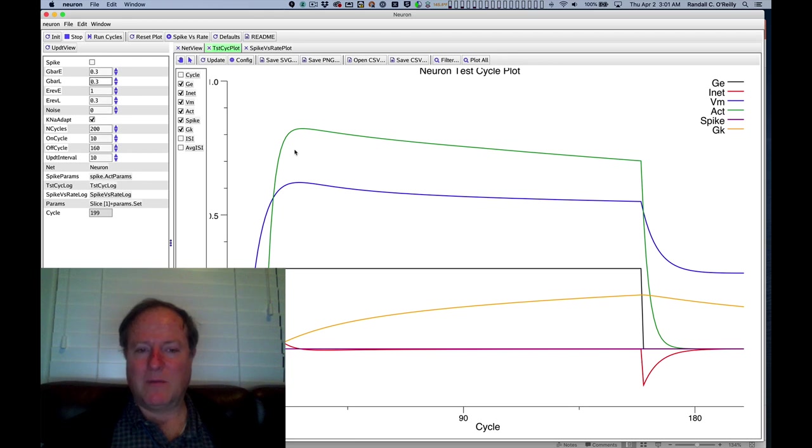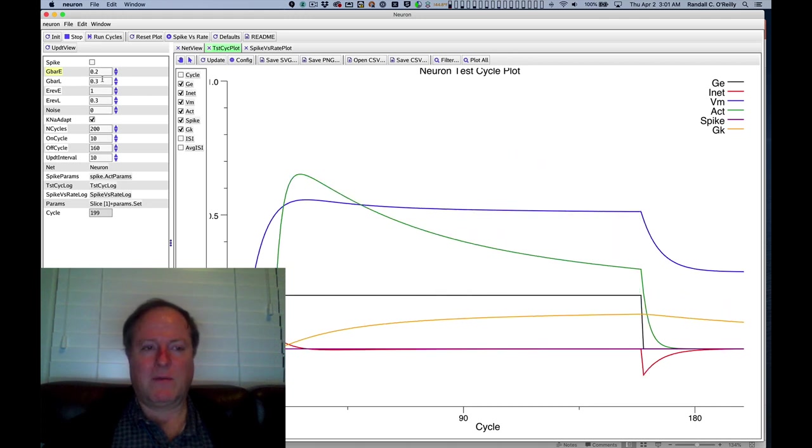But now this green line is being computed directly from the excitatory input, the ge that we're getting, relative to the ge theta, this kind of dynamic threshold that's computed from the leak or inhibition. So if I again go ahead and change this, I can see the same behavior that when I reduce the amount of excitation into the cell, the response is weaker.